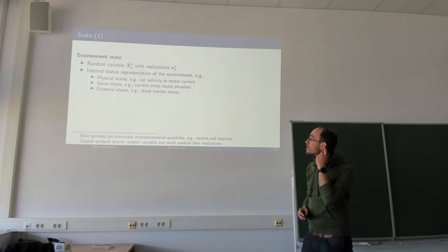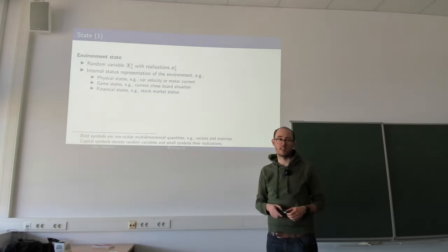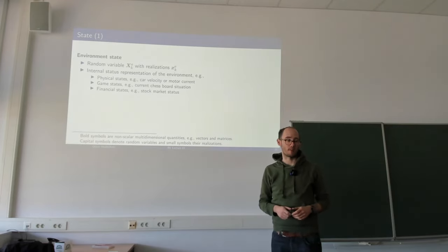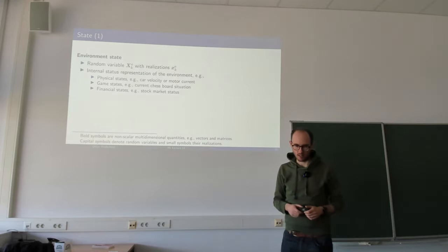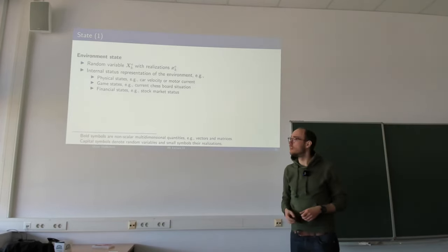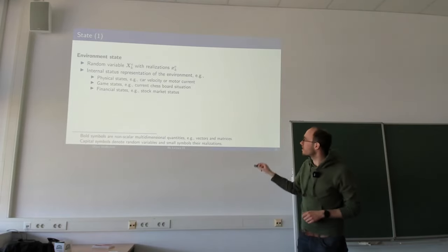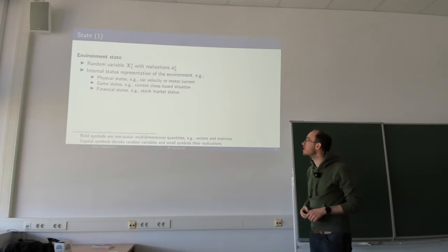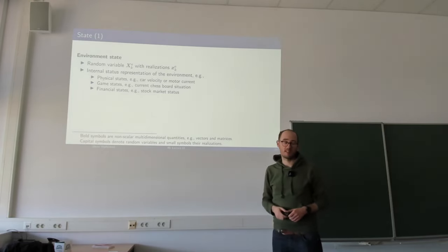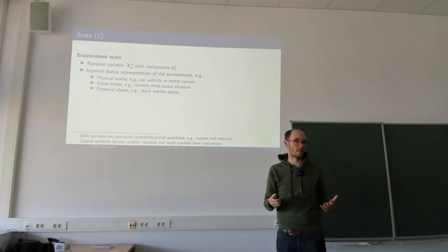Another point we saw in the loop is the state. The state is the information describing the status of the environment. We differentiate between the environment state and the agent state. In the environment state, we consider this as a random variable — capital letters with potential realizations as small letters — and the environment state indicates all information needed to describe the status of the environment to its full extent.